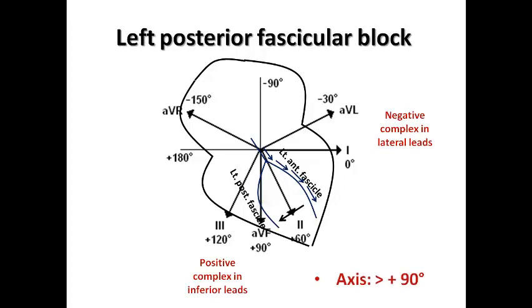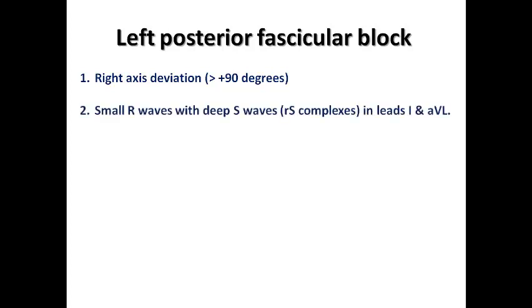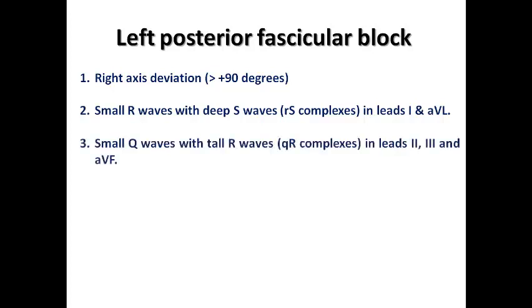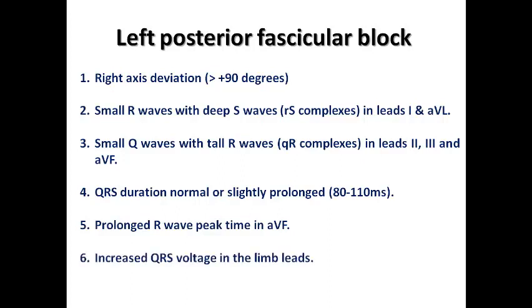The axis in left posterior fascicular block is usually greater than positive 90 degrees, ranging from positive 90 to positive 180 degrees — the right lower quadrant. It is characterized by right axis deviation, with a small R wave and deep S wave in leads I and AVL, and small Q waves with tall R waves in leads II, III, and AVF. QRS duration is normal or slightly prolonged between 80 to 110 milliseconds, with prolonged R wave peak time in AVF and increased QRS voltage in limb leads.